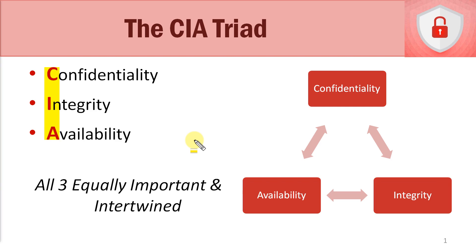Confidentiality, integrity, and availability — these are really what cybersecurity is founded upon. If you think about these three different things as three different pillars, they are the three pillars of the foundation of information security. When we're building an information security program, we need all three core principles in place, and all three are equally important. If any one of them is weak or not working properly, we're going to have issues with our foundation.